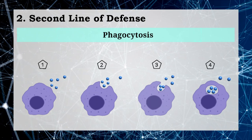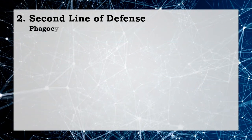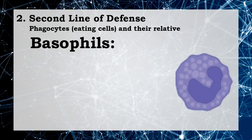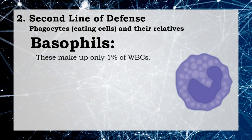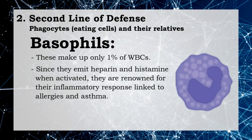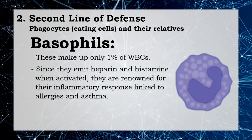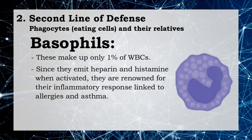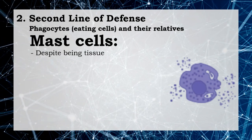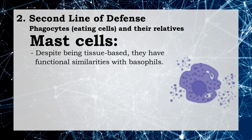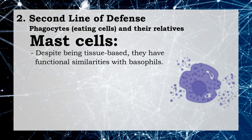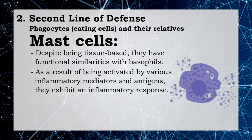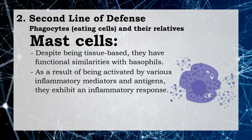Let's learn about phagocytes, eating cells, and their relatives. Basophils make up only about one percent of white blood cells; since they emit heparin and histamine when activated, they are renowned for the inflammatory response linked to allergies and asthma. Second, mast cells: despite being tissue-based, they have functional similarities with basophils. As a result of being activated by various inflammatory mediators and antigens, they exhibit an inflammatory response.